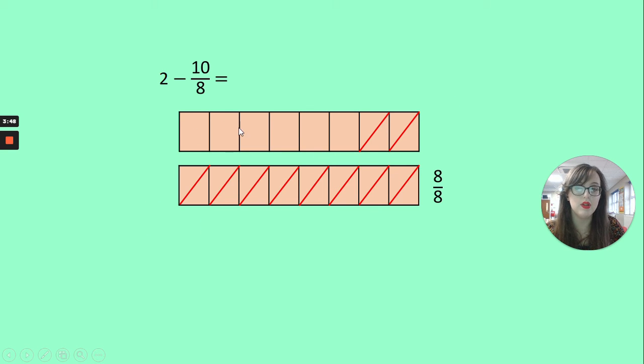And that leaves me with 1, 2, 3, 4, 5, 6 eighths. 6 eighths could also be written as 3 quarters, because it's an equivalent fraction. Both answers would be correct.